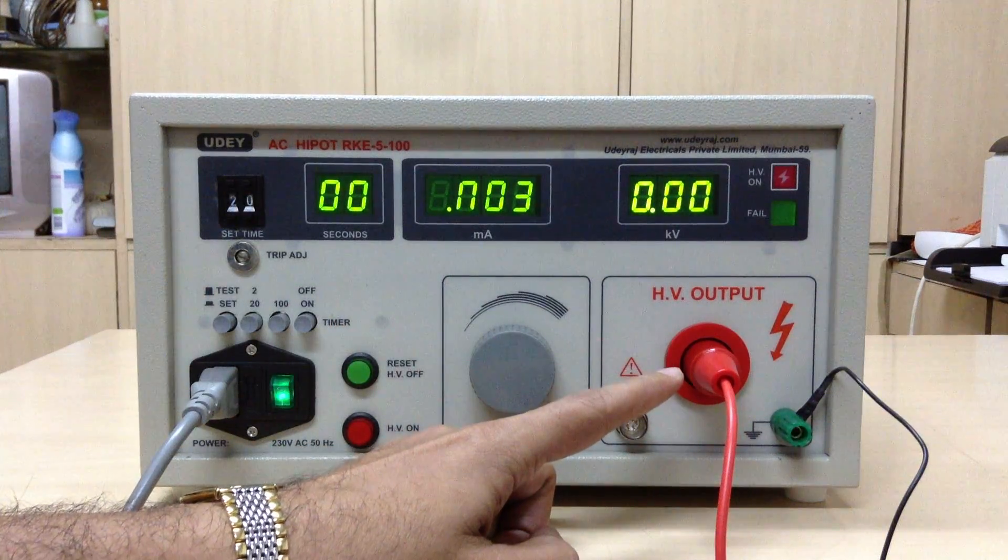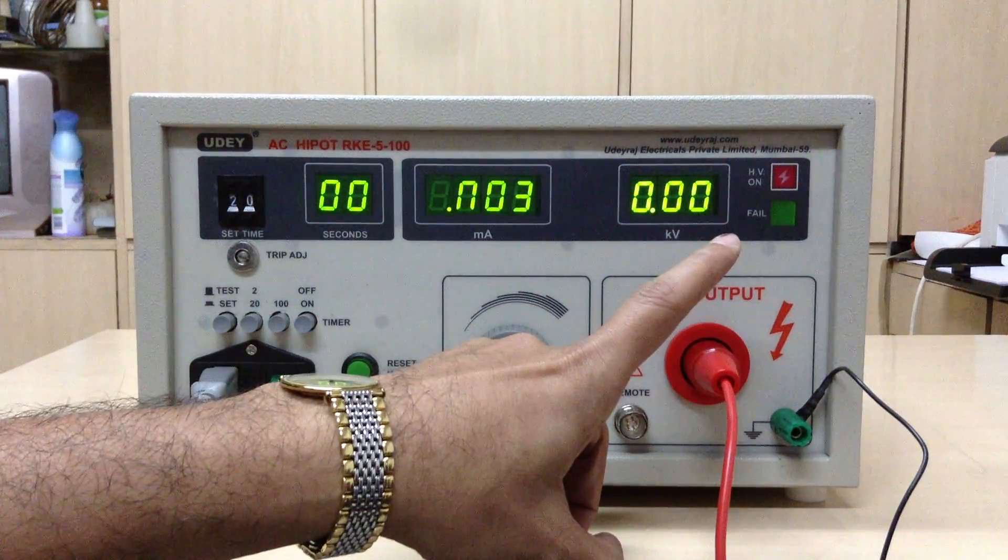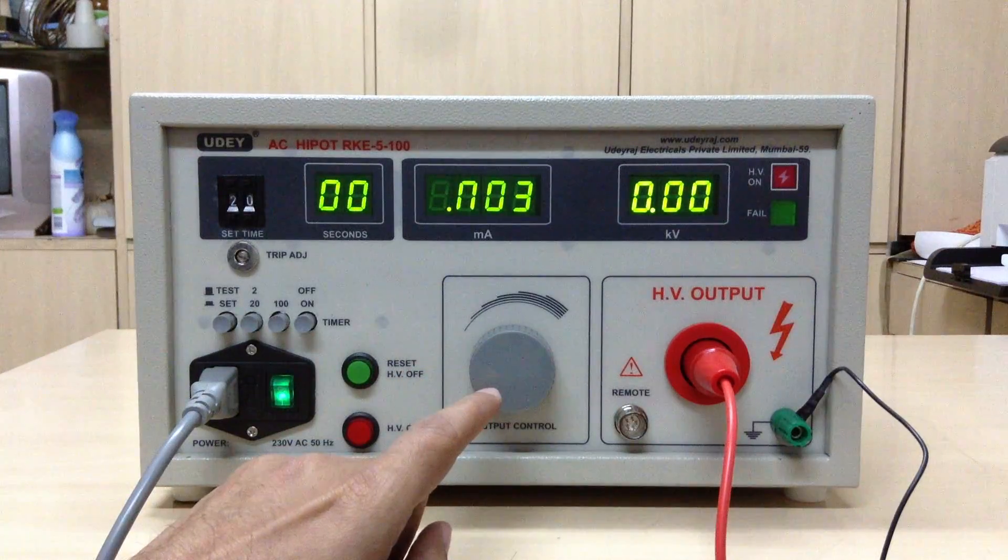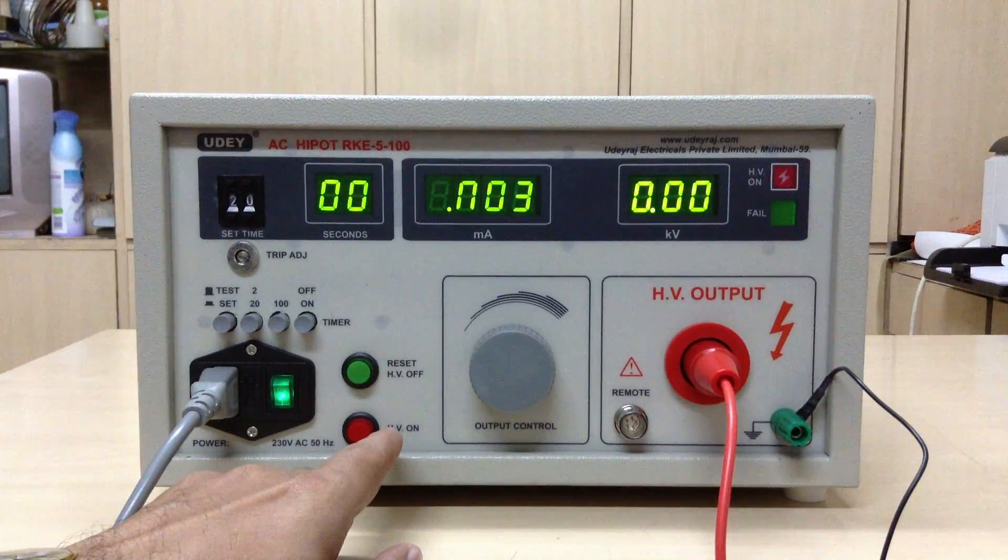The HV output is connected here, the earthing is connected here, and the HV ON indication is seen there. Failure indication is seen there. This is an output control, this is a reset HV OFF, HV ON push button switch.